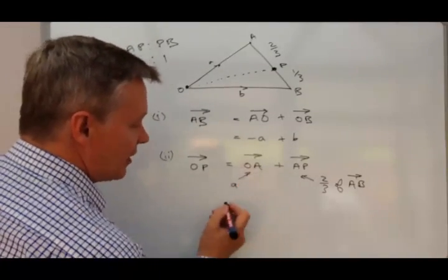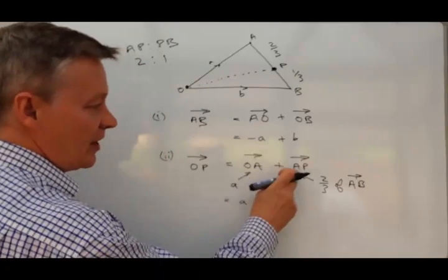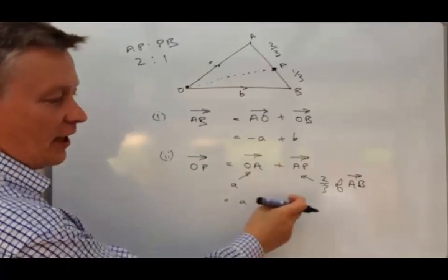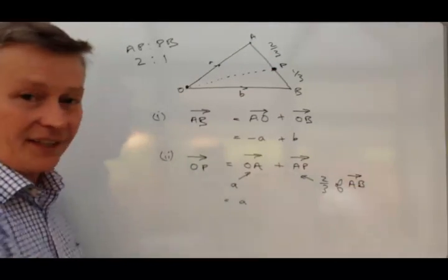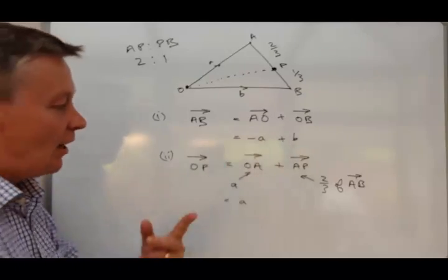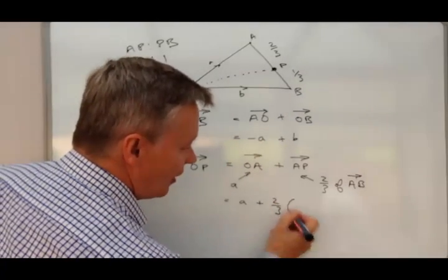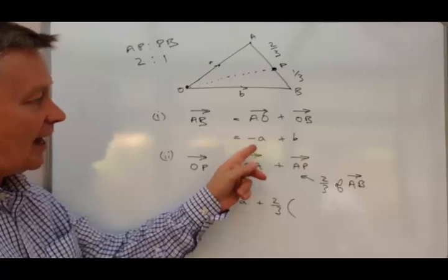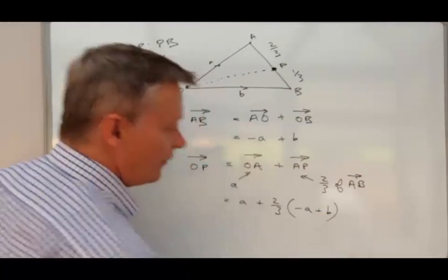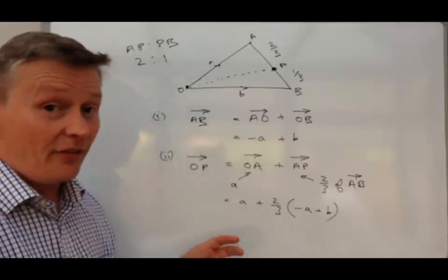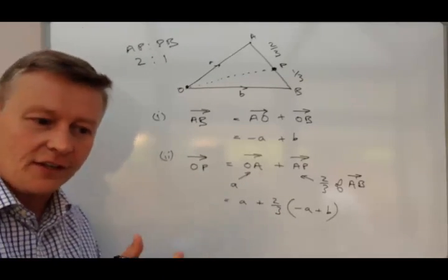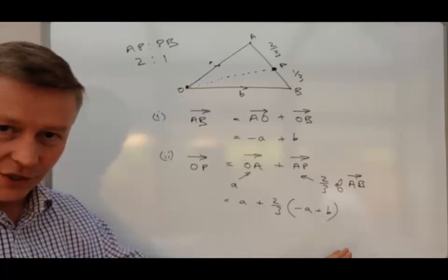So now we've got the mechanism to be able to put this together and answer the question. So this bit is easy, it's A. This bit here is vector AP. Well, we know vector AP is two-thirds of vector AB. Vector AB, we know is that. So I'm going to add two-thirds of vector AB, which is minus A plus B. So actually, that would pretty much answer the question.